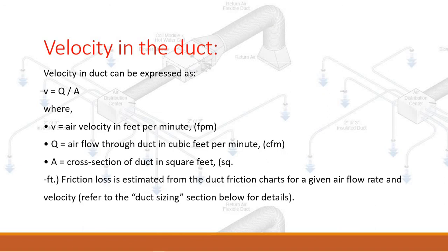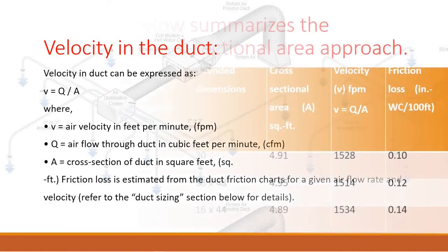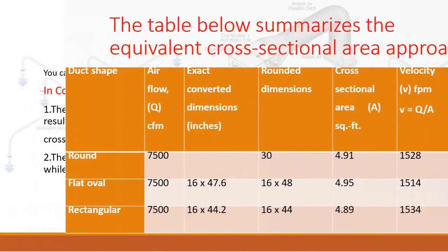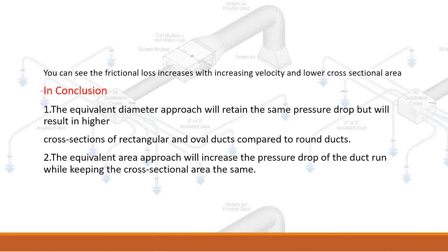Velocity in the duct can be expressed as V = Q / A, where V equals air velocity in feet per minute (FPM), Q equals airflow through the duct in cubic feet per minute (CFM), and A equals cross-section of the duct in square feet. Friction loss is estimated from the duct friction charts for a given airflow rate and velocity — refer to the duct sizing section for details. The table summarizes the equivalent cross-sectional area approach. Frictional loss increases with increasing velocity and lower cross-sectional area.